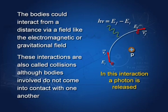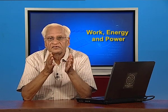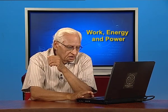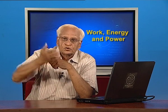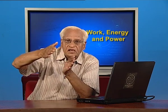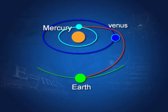In the case of an electron and proton, they interact through the electromagnetic field. They could also interact through the gravitational field. One important example of this kind of interaction is the slingshot effect. Satellites launched from the earth are guided to another planet so that they pass around that planet at a very short distance and gain energy. A satellite is launched from the earth, passes around Venus at a very short distance, and gains energy so that it can continue on its path.